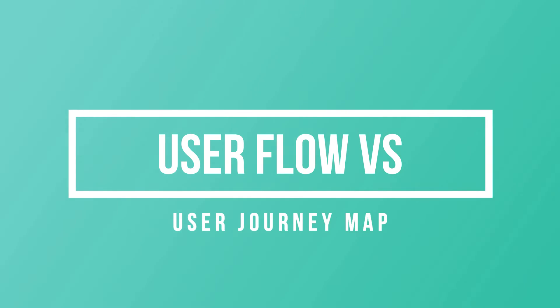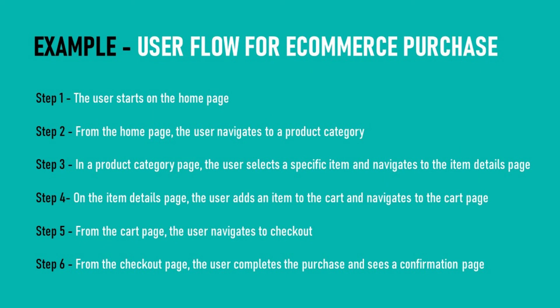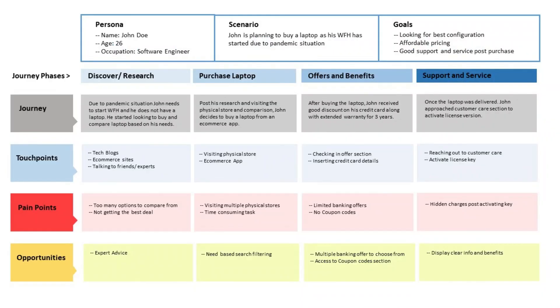Now let's see the difference between user flow, task flow, and user journey map. In user flow, it is a simple path the user takes to accomplish a goal — like when a user purchases a product from an e-commerce site: they land on the homepage, go to the product page, add to cart, and then purchase. A very simple process. Whereas the user journey is about the emotions or pain points the user faces while accomplishing the same goal. For more details about the user journey map, you can watch the video I created earlier.